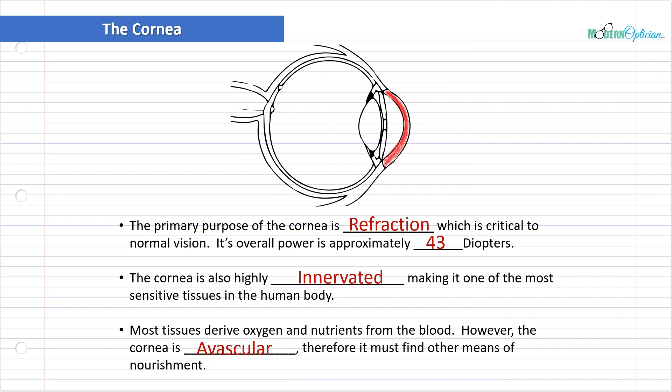Why do you think the cornea is avascular? Could it have something to do with the fact that it needs to be transparent so that light could pass through, right? We need to have a perfectly transparent surface and structure. However, if blood vessels are coursing through this tissue, it's very difficult for it to be perfectly transparent. So the cornea has a different way of getting nourishment and oxygen, which we will talk about on the next slide.